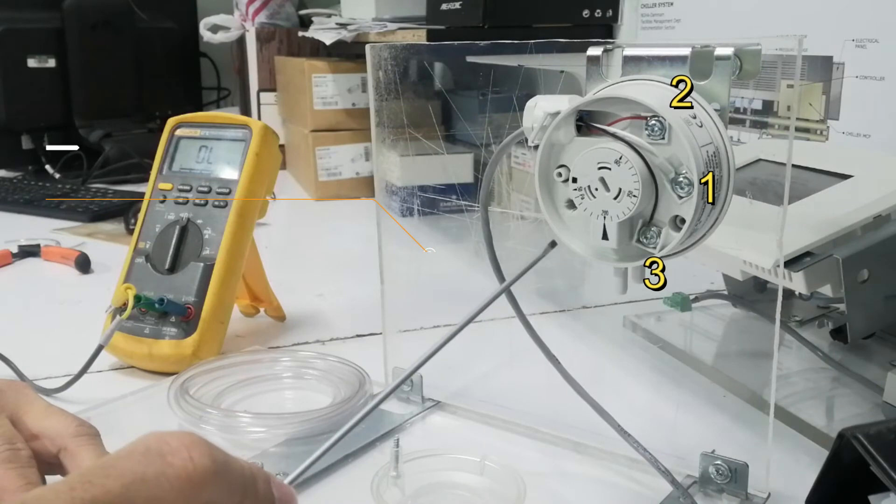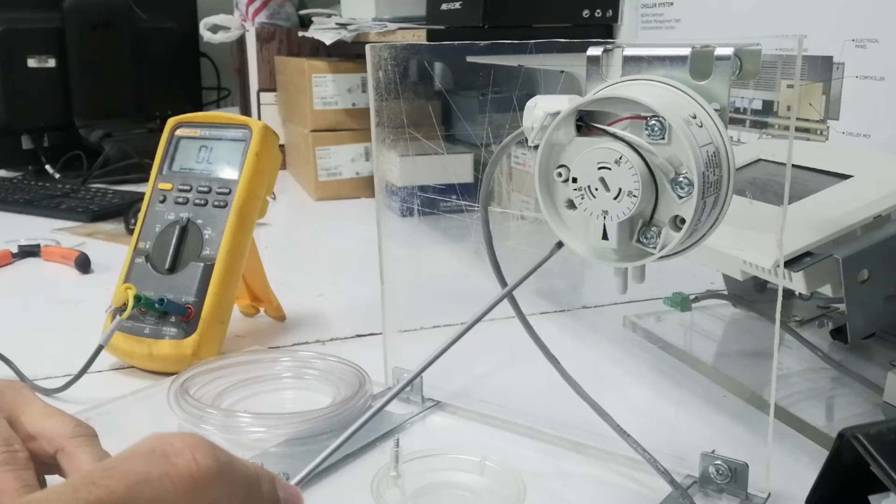Terminal 1 and 2 is normally closed contact. And Terminal 1 and 3 is normally open contact.